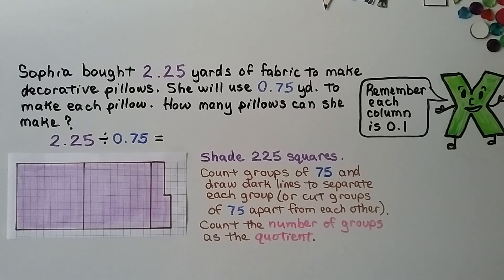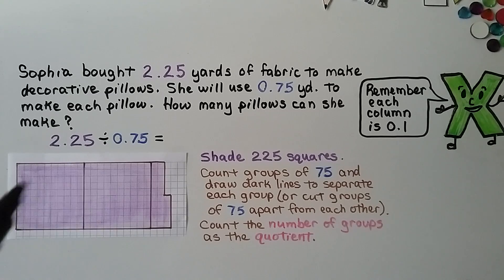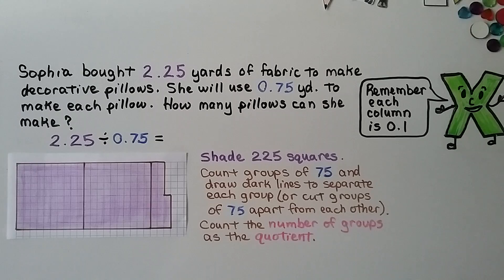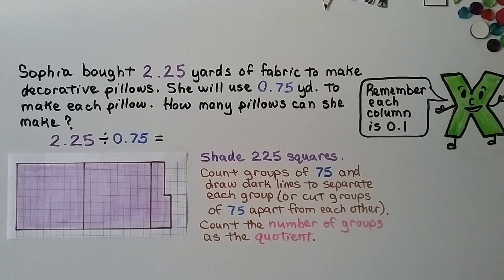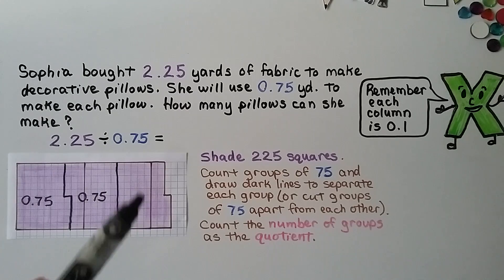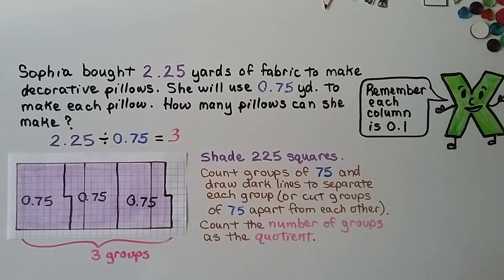Sophia bought 2 and 25 hundredths yards of fabric to make decorative pillows. She will use 75 hundredths of a yard to make each pillow. How many pillows can she make? We have 2 whole units and then 2 columns for the 2 tenths and 5 separate squares for the 5 hundredths. We make groups of 75 squares — each square is 1 hundredth — and we find 3 groups of 75 hundredths. Sophia can make 3 pillows.